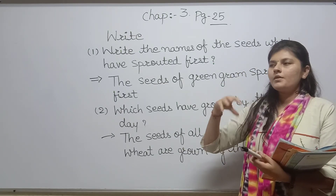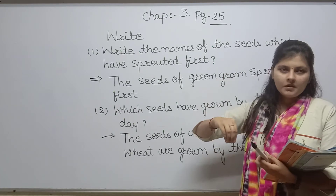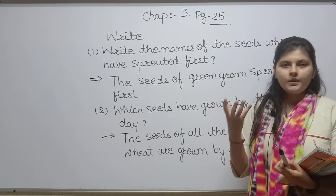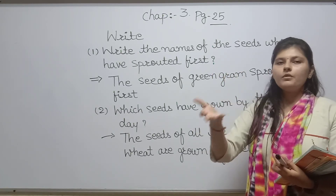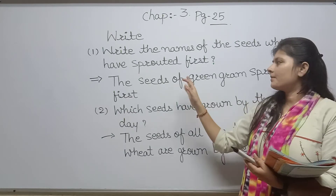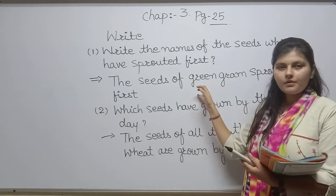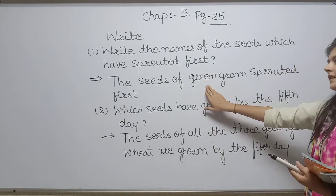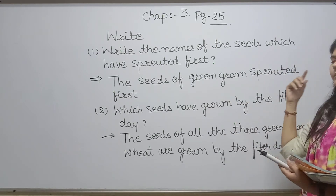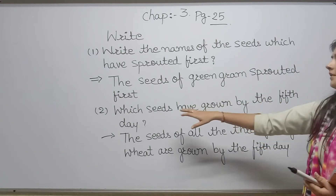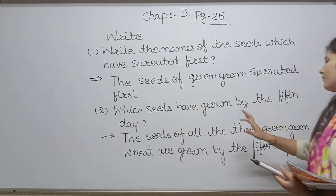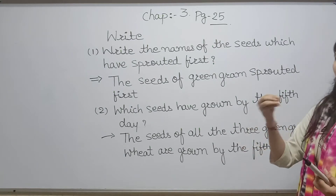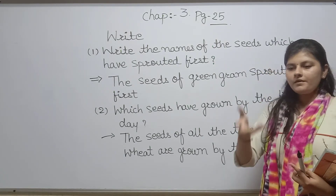The first to sprout is green gram, because when you soak green gram or bengal gram in water and keep it in cotton, in one or two days they will grow. So green gram is the first seed that is going to sprout.